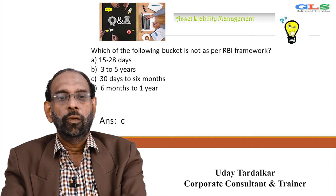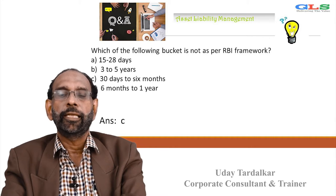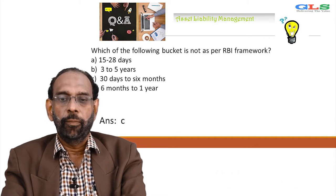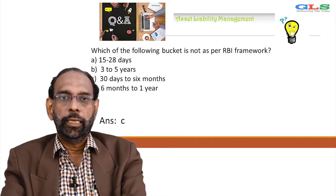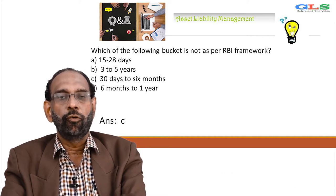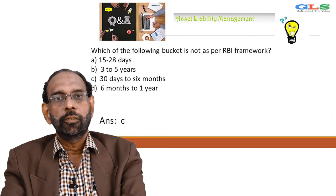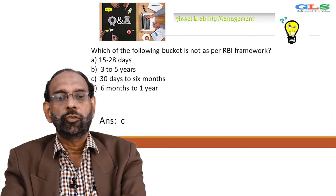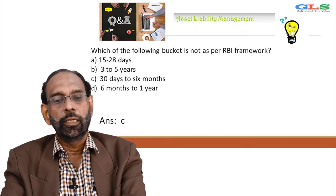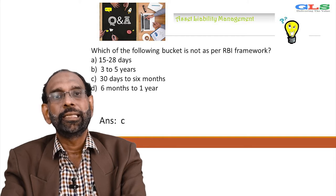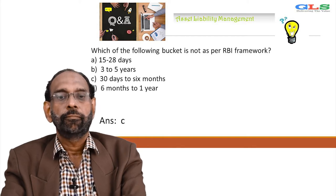First question: which of the following bucket is not as per RBI framework? Choice A: 15 to 28 days. Choice B: 3 to 5 years. Choice C: 30 days to 6 months. Choice D: 6 months to 1 year. Answer is C.